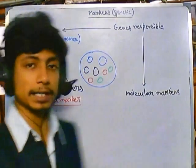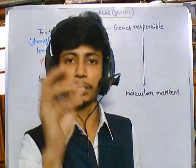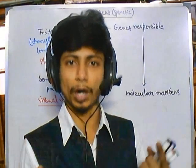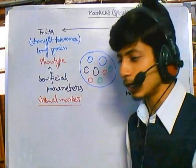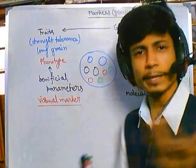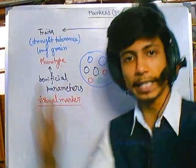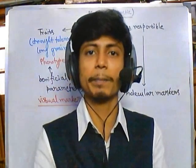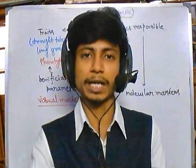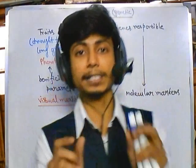We use these markers to fish out particular important characteristics from a whole lot. For example, we pick only drought tolerant and infection resistant plants, select them, cross-breed them only, and we get offspring having both characters together.